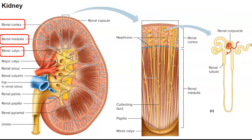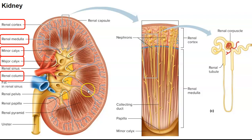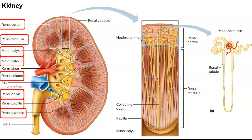Here's a minor calyx, and here's another minor calyx. Where the minor calyces come together, they make a larger opening called a major calyx. A renal column is the area in between renal pyramids. The renal pelvis is where all the major calyces drain into. And then the renal papilla is this portion of the renal pyramid. The renal pelvis then becomes the ureter.